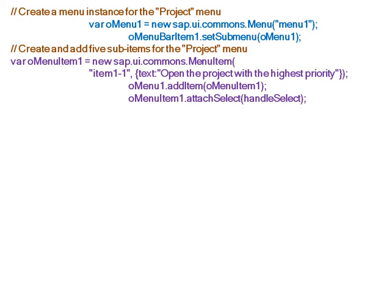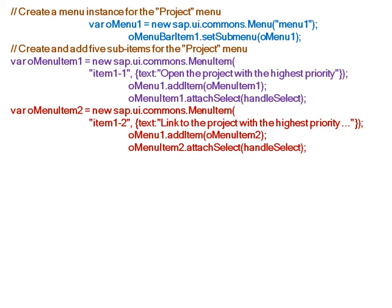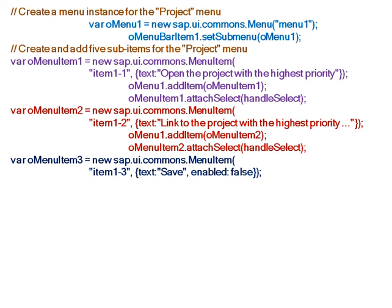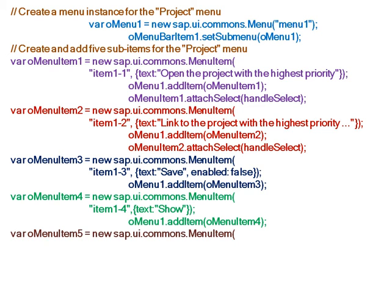We also attach the handleSelect event to this first menu item. The second menu item has the text 'link to the project with the highest priority', and we add it to the project menu with the event attached. The third menu item has the text 'save' and is disabled. The fourth menu item has the text 'show', and the fifth menu item has the text 'properties' — both added to the project menu.